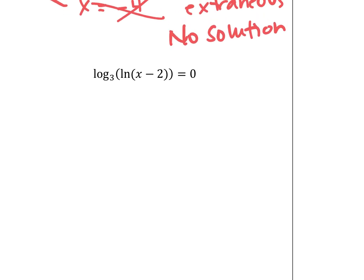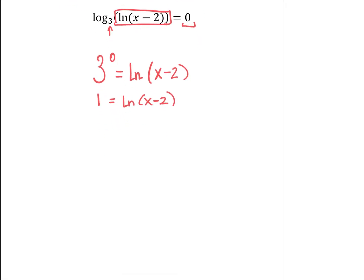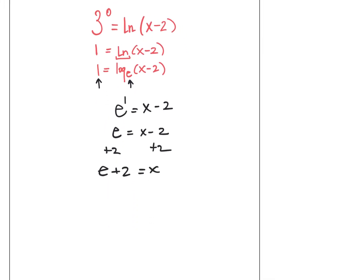Last equation: we have log base 3 of (natural log of x minus 2) equals 0. Baby steps — I see log of some chunk. Our base is 3, our exponent is 0, and this equals the argument, which is natural log of x minus 2. So 3 to the 0 equals 1, meaning 1 equals natural log of x minus 2. Now natural log is log base e of (x minus 2), so rewriting: base e, power 1, equals x minus 2. Therefore e equals x minus 2.